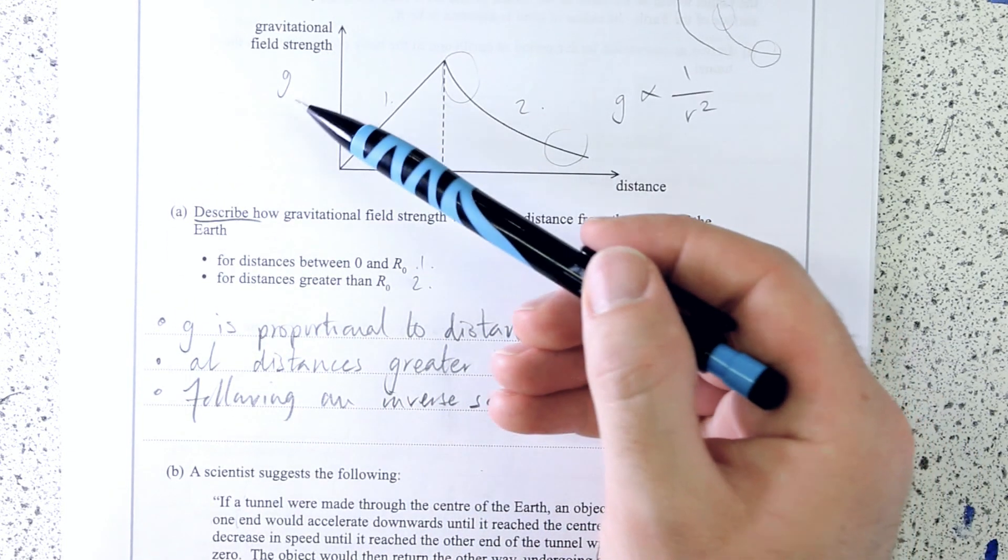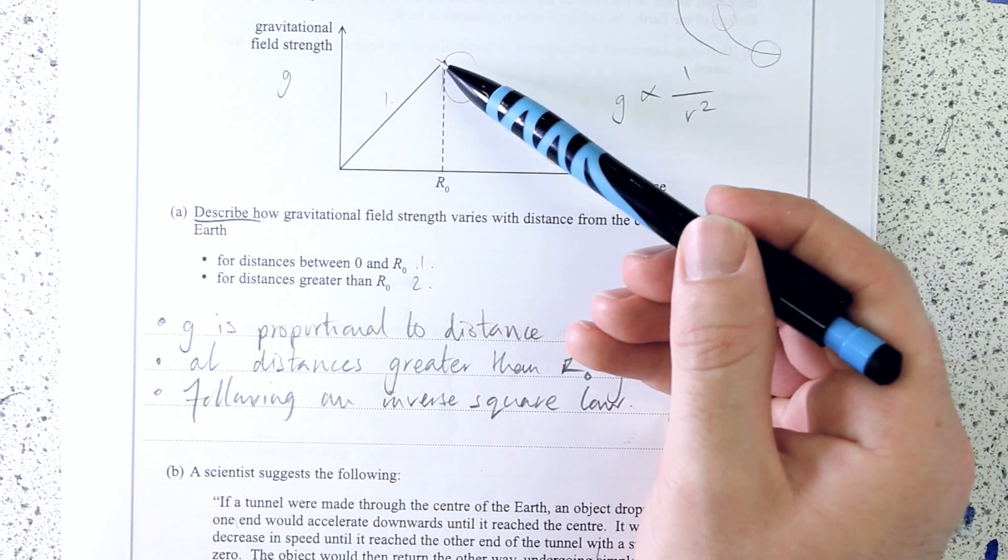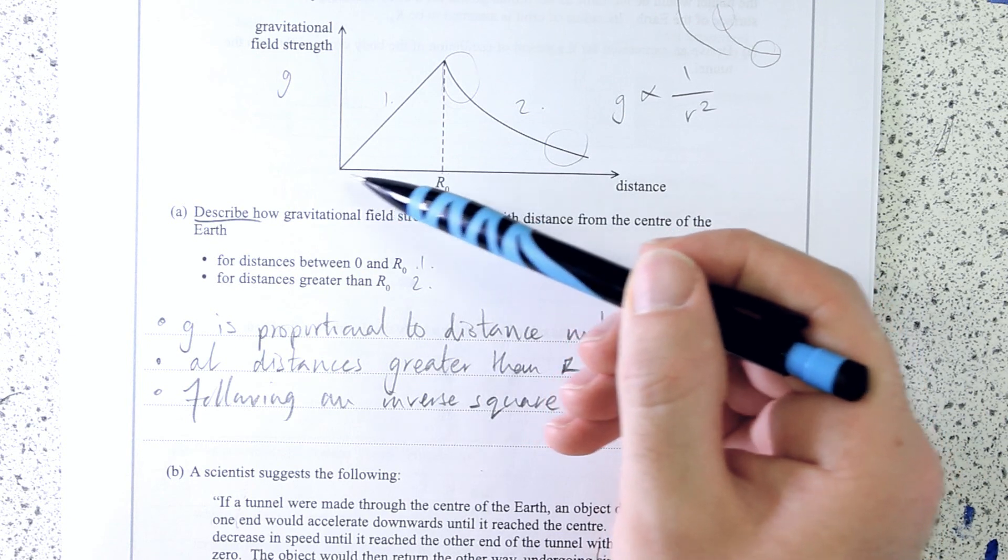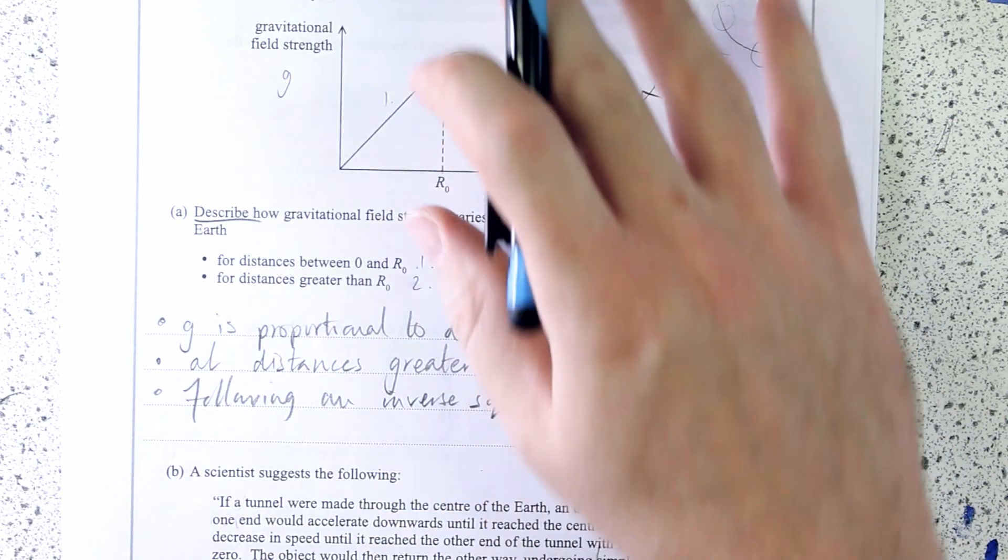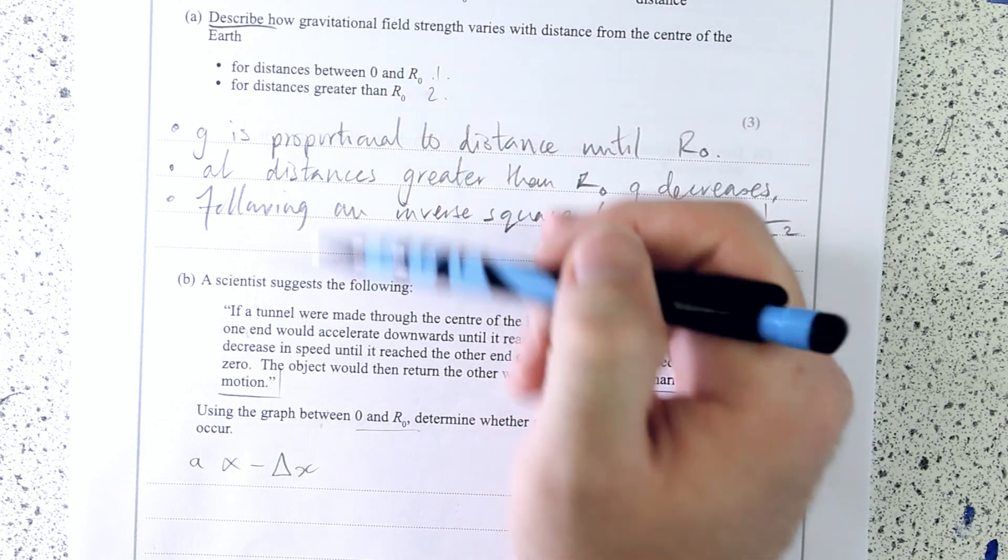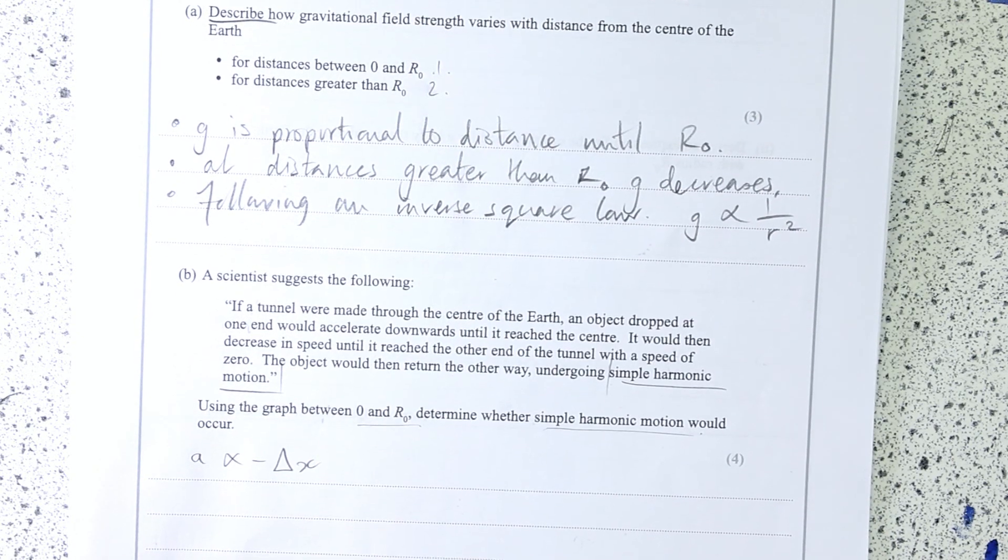So is that the case? So, yes. In this case, acceleration is g, which is varying proportionally with the distance from the centre of the Earth. It wouldn't indeed be negative if we had this graph the other way around. But yes, that is the case.